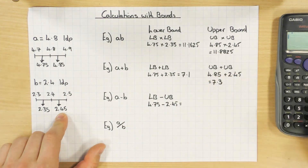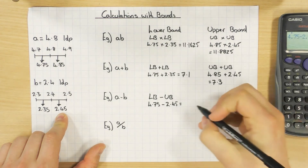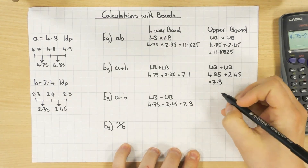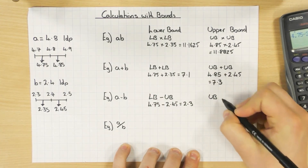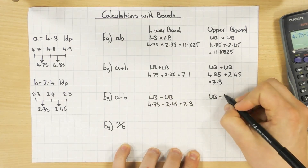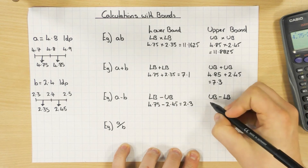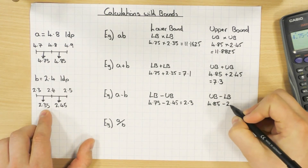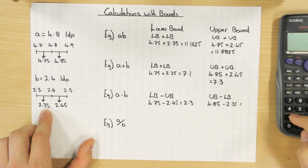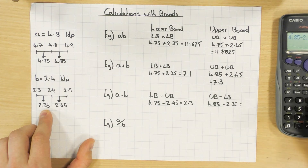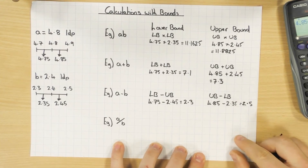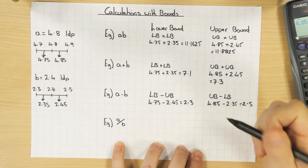For the lower bound of a − b: 4.75 − 2.45 = 2.3. For the upper bound of a − b, the first number needs to be as large as possible and the number subtracted as small as possible — upper bound minus lower bound: 4.85 − 2.35 = 2.5.